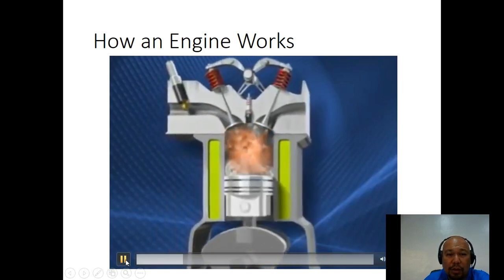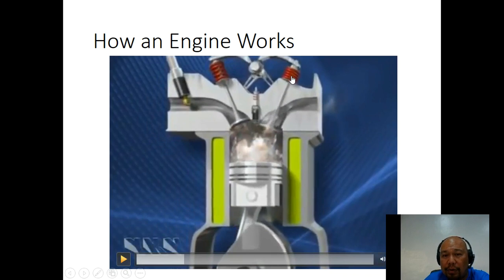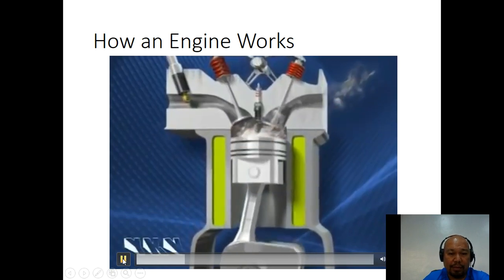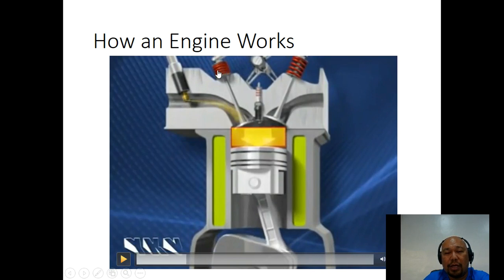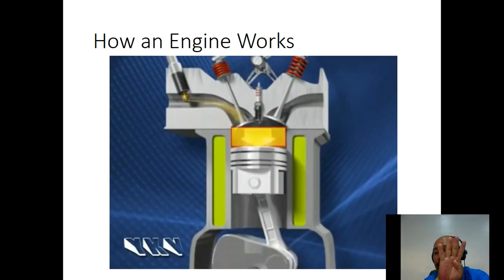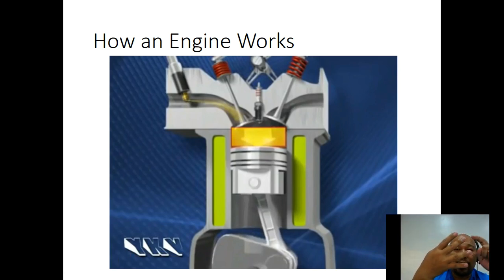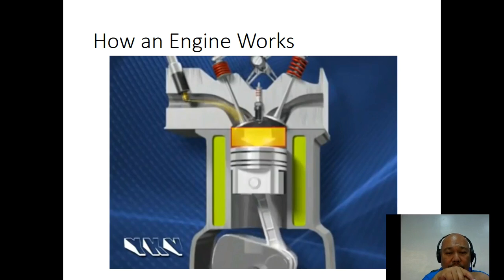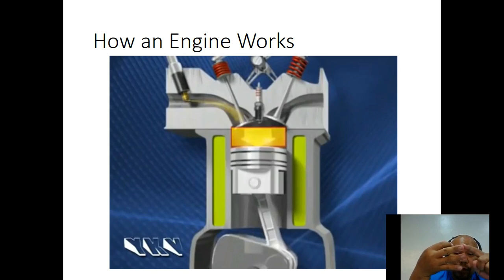The lateral motion is turned into rotating motion. When the valve is pushed down, the exhaust manifold opens; when another valve is pushed down, the intake manifold opens. During intake, the piston is going down. A four-stroke cycle engine has four strokes to complete one cycle: the intake stroke, the compression stroke, the power stroke, and the exhaust stroke.